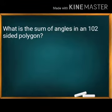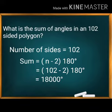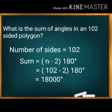Now let's check the answer for the 102-sided polygon. Using the formula: sum = (N−2) × 180°, with N = 102: (102 − 2) × 180 = 100 × 180 = 18,000 degrees.